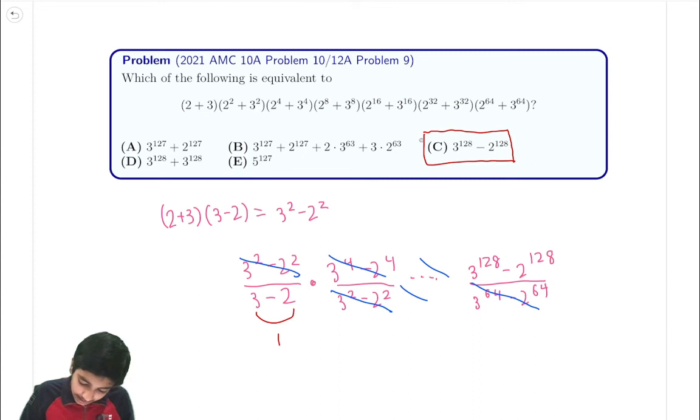And actually, there's actually a really easy way to meta-solve these problems. So basically, what you can do is, rather than expanding this long expansion, we can just do something like 2 plus 3 times 2 squared plus 3 squared. And we see this is just equal to 5 times 13, which is 65. And then we see, okay, which of the following is equal to?